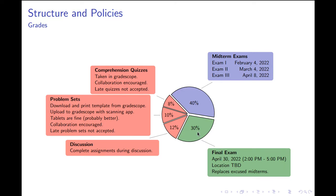The final exam accounts for the last 30%. The midterm exams are 50-minute exams during lecture, but the final exam is on April 30th, a three-hour cumulative exam from 2pm to 5pm — location to be announced. If you miss a midterm and the absence is excused, your performance on the final will make up for that excused midterm. So if you're sick and have your absence approved by the dean, your final exam score will substitute for the missed midterm.